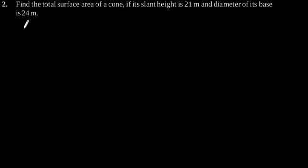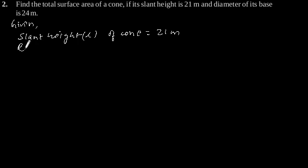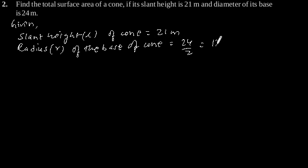Given: slant height L of cone is equal to 21 meter, radius R of the base of cone is equal to 24 divided by 2, which is equal to 12 meter.